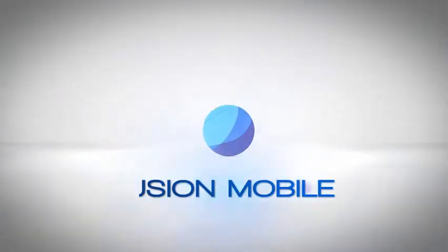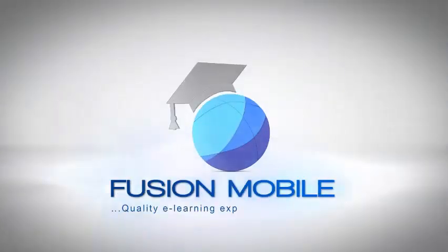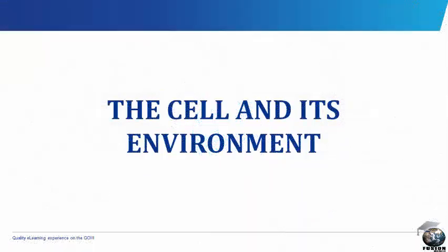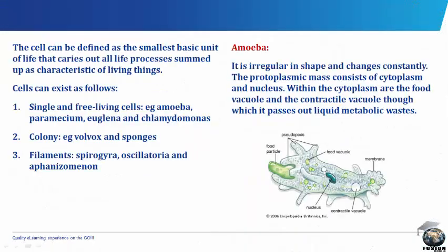Fusion Mobile: quality e-learning experience on the go. The cell and its environment. The cell can be defined as the smallest basic unit of life that carries out all life processes, some of the upper characteristics of living things. Cells can exist as follows.